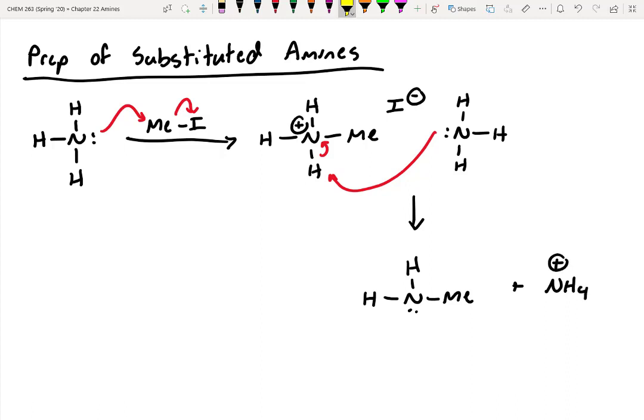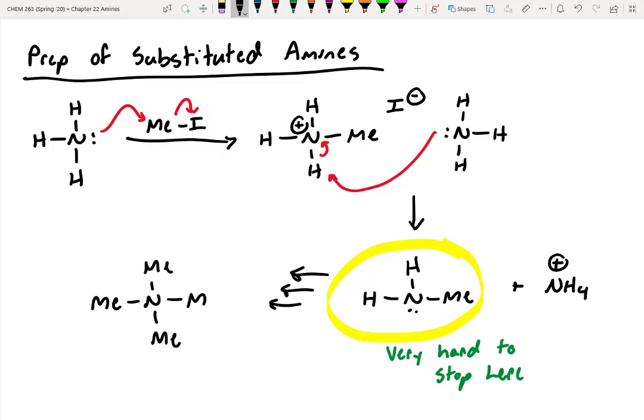However, the main pitfall with this is it is very hard to stop here. And what I mean by that is, as soon as you make this, it's going to find some unreacted methyl iodide, and oftentimes run out of control, meaning it's just going to keep on reacting with as much methyl iodide as it can find. And what we'll make is a quaternary ammonium salt, where it just exhaustively alkylates that amine. And iodide would be the counter anion. And like I said, this is called a quaternary ammonium salt.